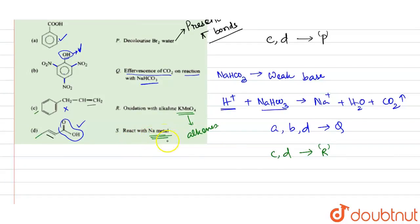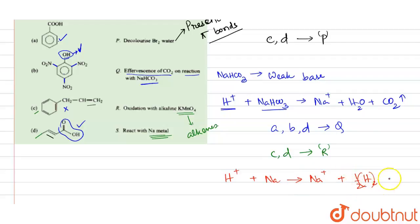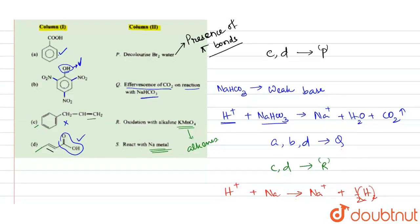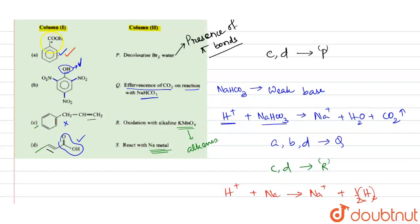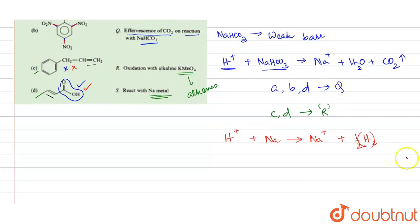The last reaction involves reaction with sodium metal. Sodium metal reacts with acidic groups — the H⁺ from the acid reacts with sodium metal to form a sodium salt and liberate hydrogen gas (½H₂). Compound A contains a –COOH group (acidic), compound B has a phenolic –OH made strongly acidic by the three electron-withdrawing groups at the 2, 4, 6 positions, compound C has no acidic group and will not react, and compound D has a –COOH group. Therefore, A, B, and D are linked with option S.